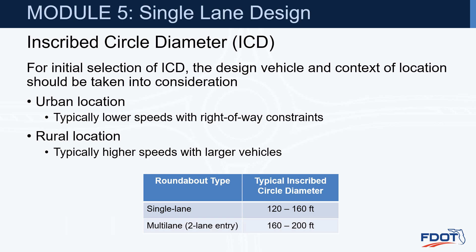For the initial selection of our ICD, the design vehicle and context of location should be taken into consideration. Urban locations typically have lower speeds and more right-of-way constraints, and often smaller design vehicles. In rural locations we have higher speeds and many times larger design vehicles. Typically single-lane roundabouts will be in the 120 to 160-foot ICD range, and the Florida DOT recommends starting at 140 when possible — a nice size to accommodate the WB-62FL. For two-lane entries, the circle size is typically 160 to 200 feet, with 180 being a nice starting point for a multi-lane roundabout.